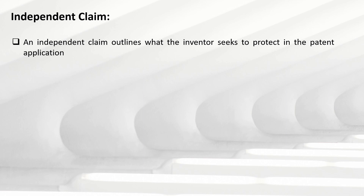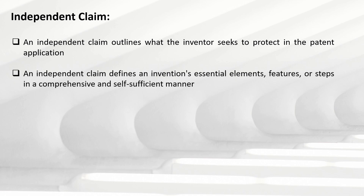An independent claim outlines what the inventor seeks to protect in the patent application. It is the most important type of patent claim. An independent claim defines an invention's essential elements, features, or steps in a comprehensive and self-sufficient manner — meaning it mentions only those elements, features, or steps without which the invention won't work. Only the most necessary elements, without which the invention won't function, are included in the independent claim.